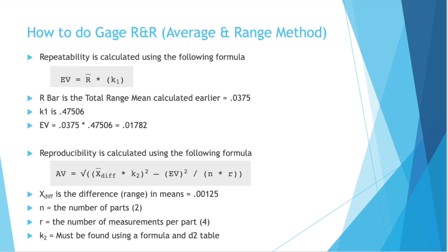Repeatability is also known as equipment variance, which is where the ev comes from.